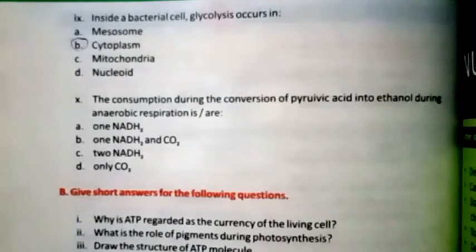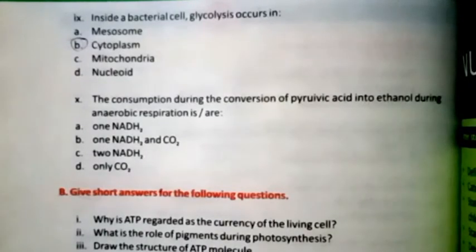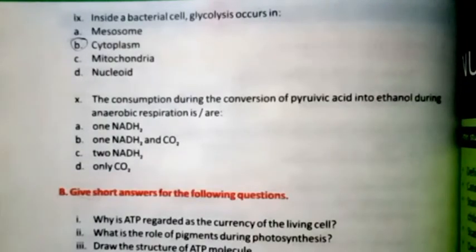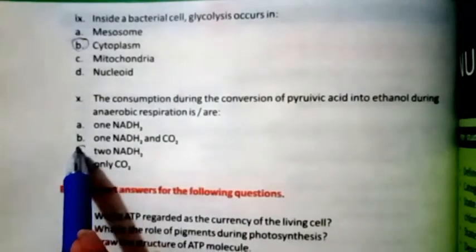Question ten: The consumption during the conversion of pyruvic acid into ethanol during anaerobic respiration is 1 NADH₂, 1 NADH₂ and carbon dioxide, 2 NADH₂, or only carbon dioxide. The right option is C — 2 NADH₂.